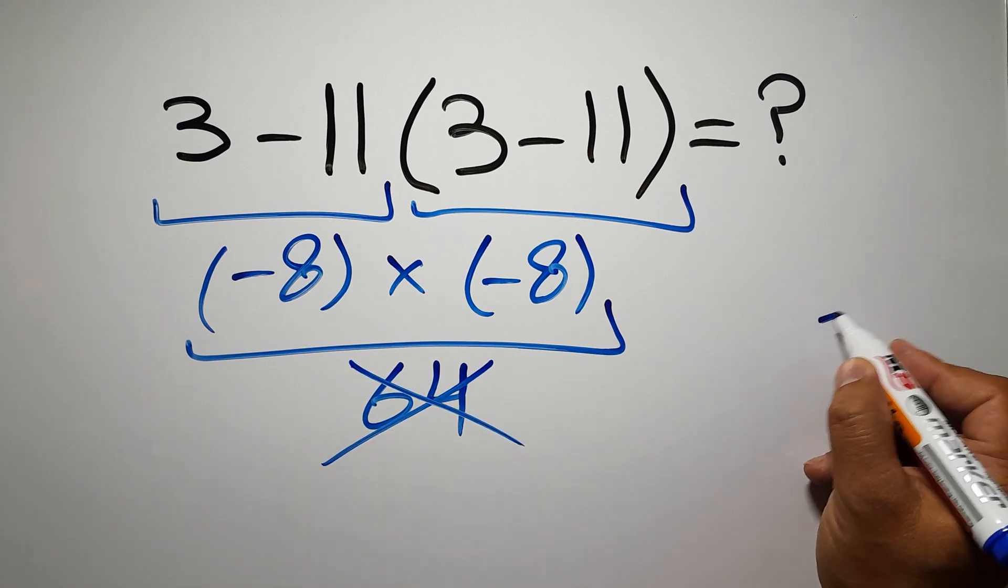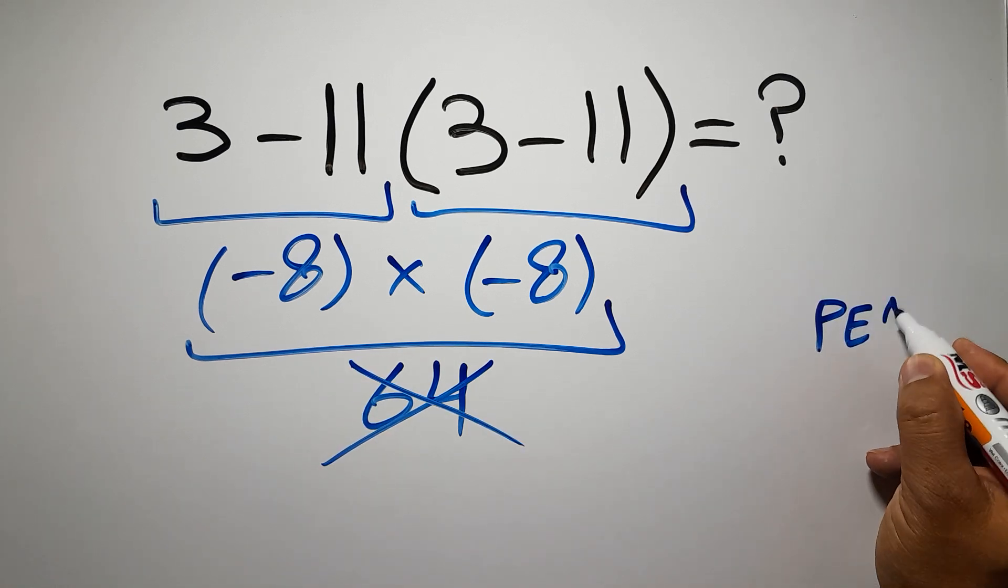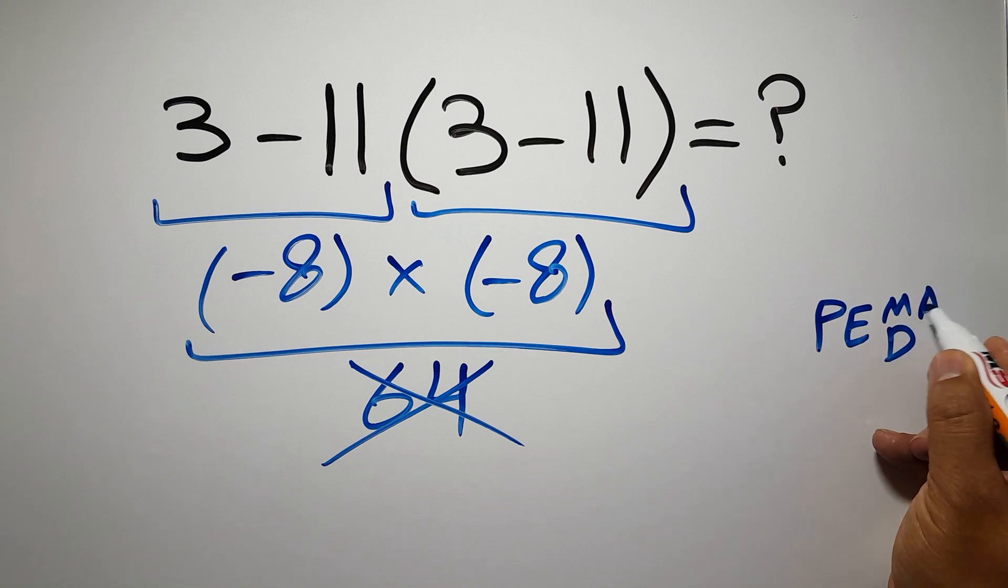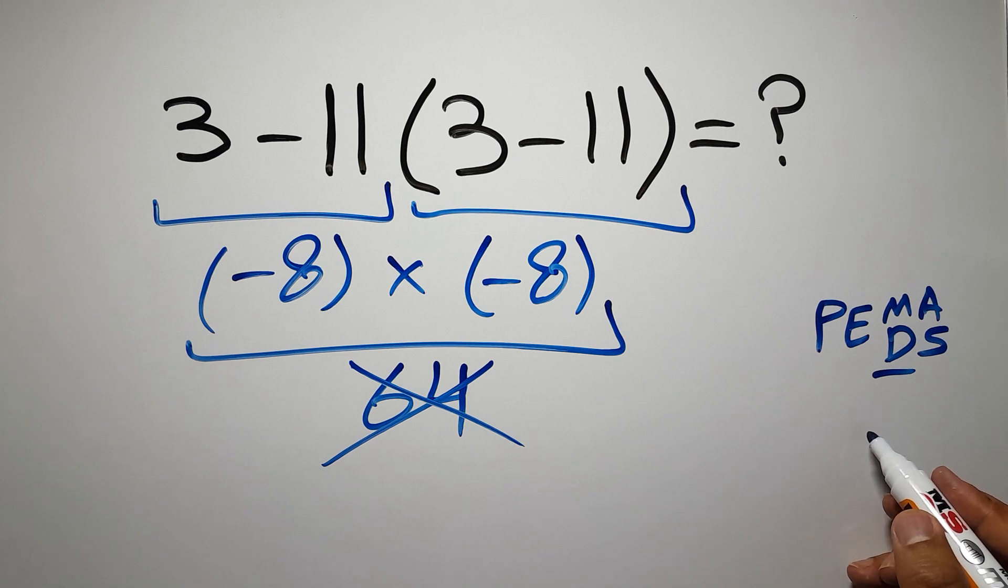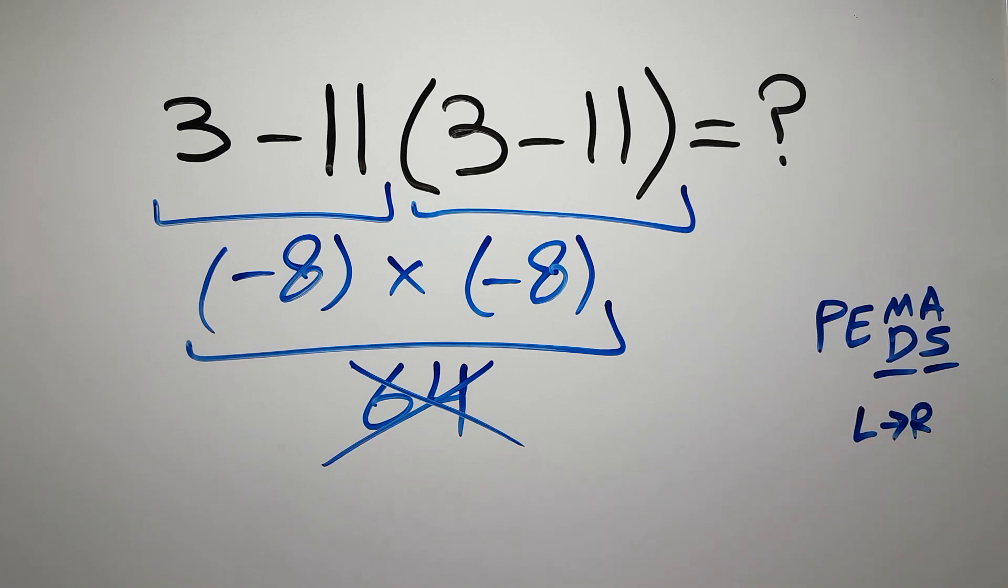First we have to do parentheses, then exponents, then multiplication or division, and finally addition or subtraction. Remember that multiplication and division have equal priority and we have to go from left to right, and the same applies to addition and subtraction.